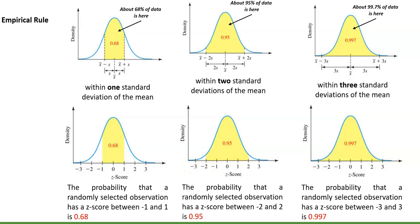When we use the empirical rule we have limits, because everything is in terms of exactly one, two, or three standard deviations. But what if we want to find the probability that a randomly selected observation is between z-scores of −1.5 and 1.5, or uses values like 1.7 or 2.3? To find the area under the normal curve for those intervals, we need to go beyond the empirical rule and use technology — like a calculator — or special tables.